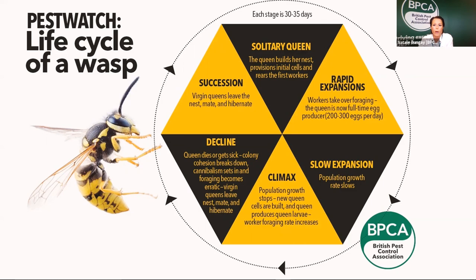Once the workers hatch out they take over, and the queen can spend all her time producing new eggs - about 200 to 300 per day. Colonies normally get to about 5,000 workers at their peak. However, workers don't live very long - usually a couple of weeks - so the queen needs to constantly refresh them. The expansion will slow down slightly and eventually stop as the season comes to a close.